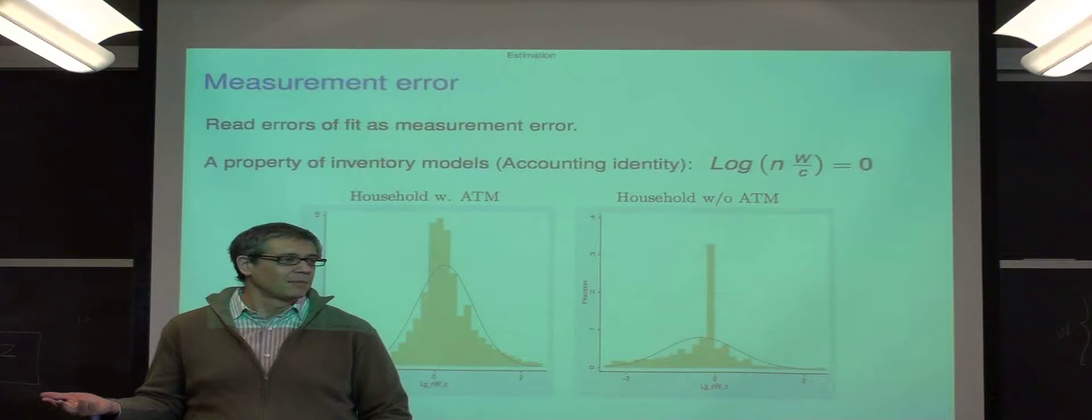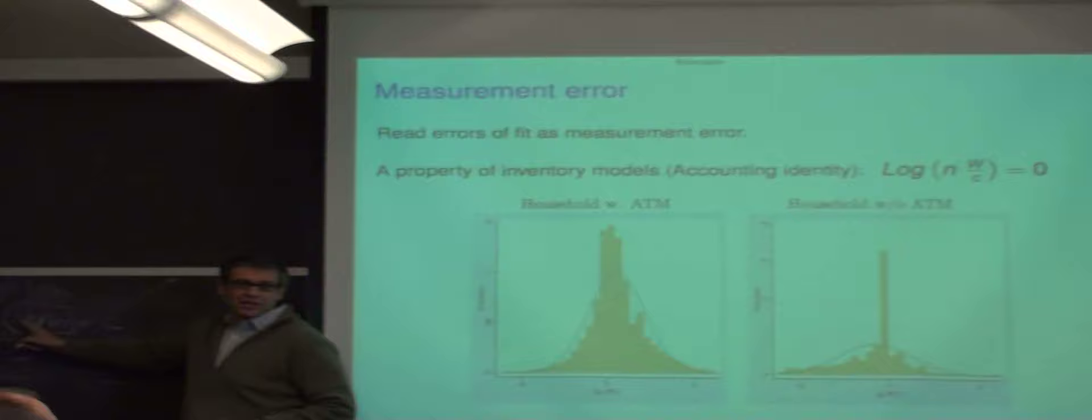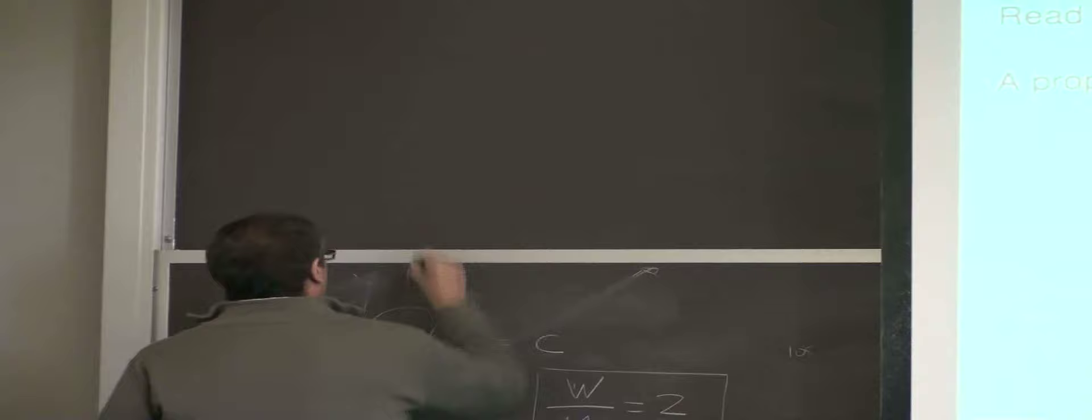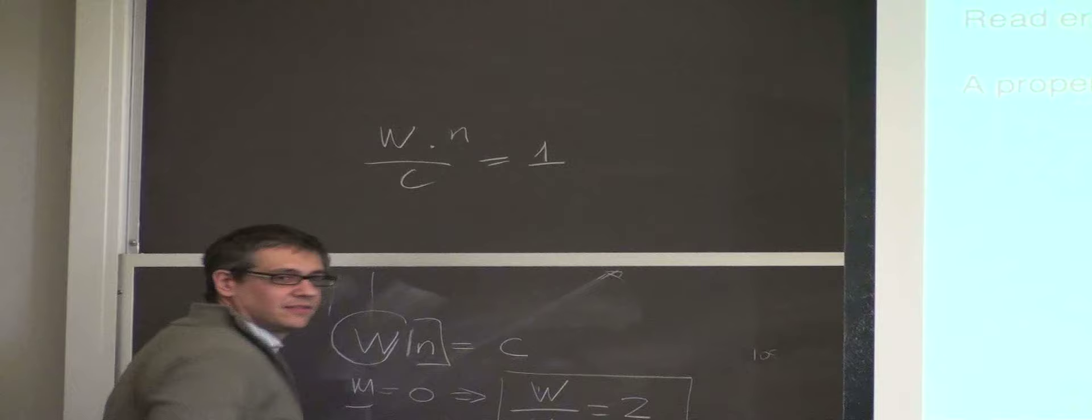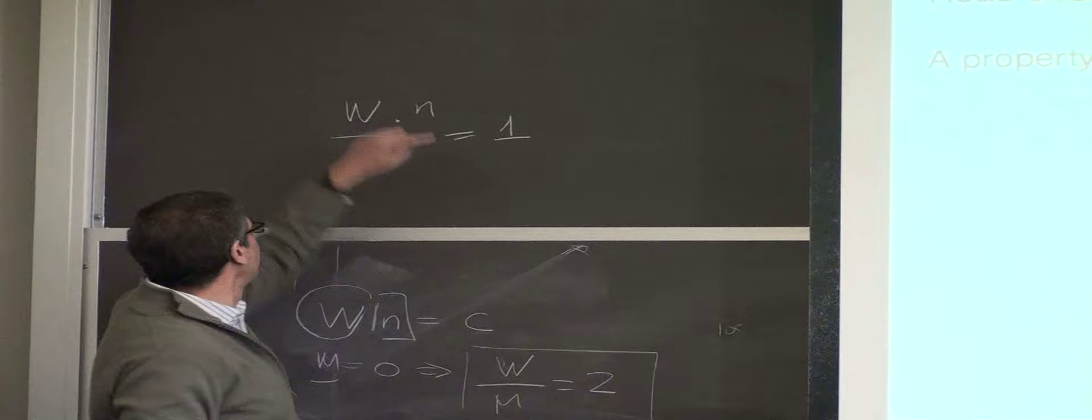The equivalent here is, what is your withdrawal, the number of withdrawals, and your consumption. Let me rewrite this by saying that w times n over c should be equal to 1 for each household. Then let's take logs to make the deviations from 1 in percentage, and let's plot this.